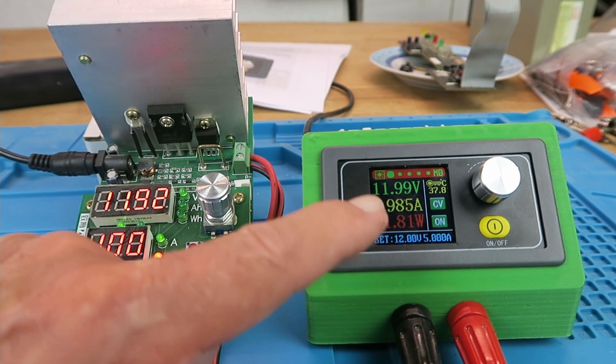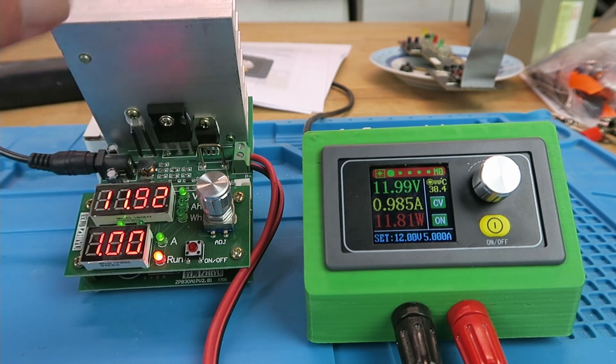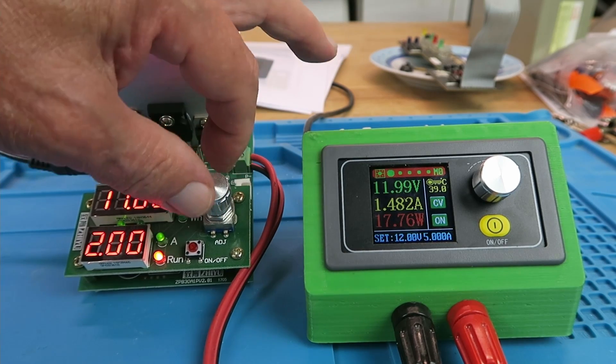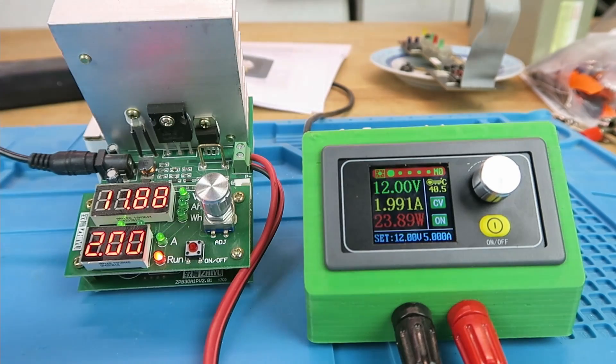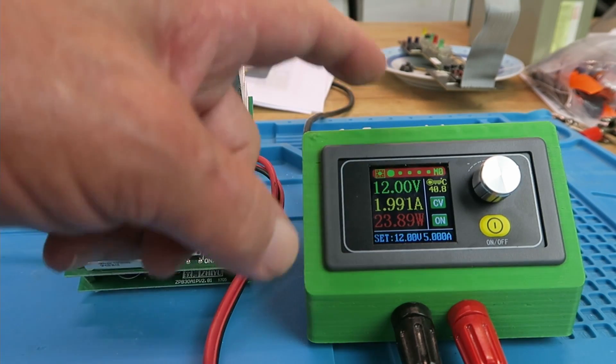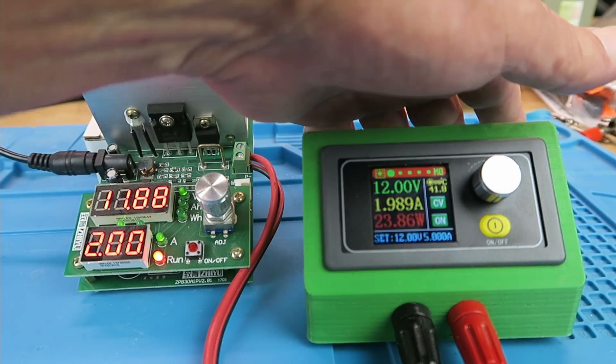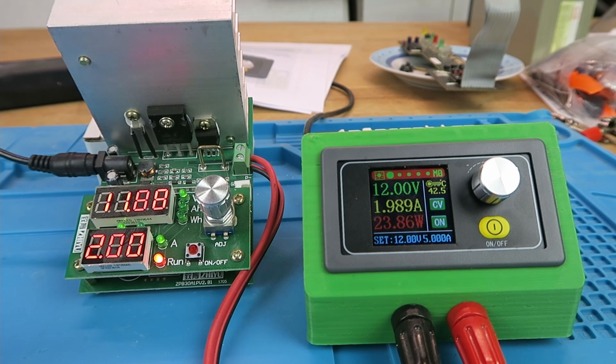Now we can see the load appearing here and I can adjust the value by turning the knob here. So we take it up to 2 amps. Now I guess you probably can't hear that, but the fan has started inside the little unit there. It is remarkably silent, which is unusual for these things. That's very welcome. It's not going to cause a great deal of noise in your home environment.